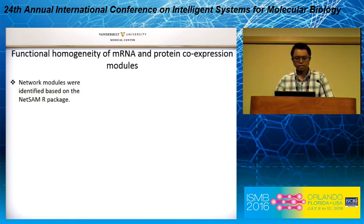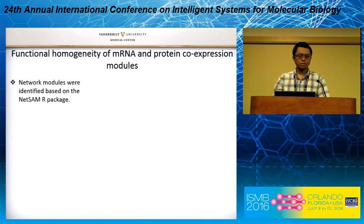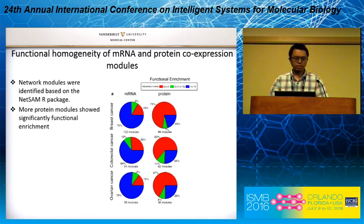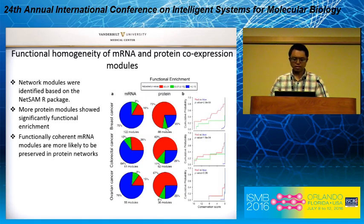Then we performed network module-level comparison between the two networks. The network modules were identified based on the network data sample package. We performed gene ontology enrichment analysis and found more protein modules showed significant functional enrichment than mRNA modules. We also found that functionally coherent mRNA modules are more likely to be preserved in protein networks.